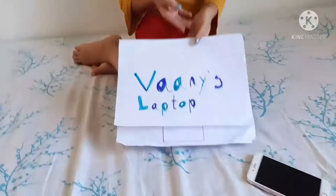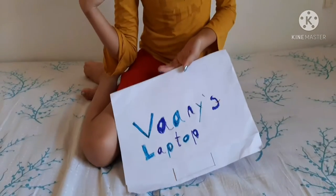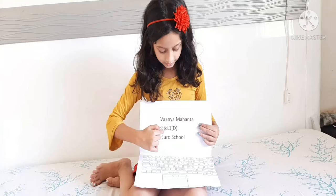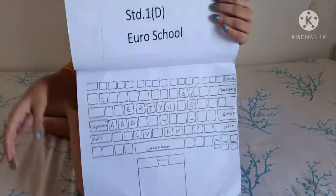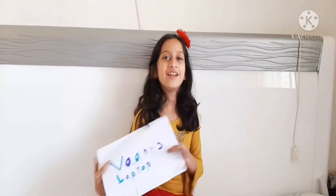Over here it says 'Vanya's Laptop' because it's my laptop, and over here it says 'This for School.' I already have some dialogue prepared. This is what I have written: Vanya Mahanta, Standard One, Euro School. I only use the keys that have been used over here. Now I will tell you how to make this lovely laptop.